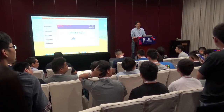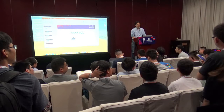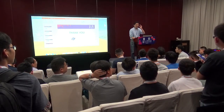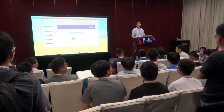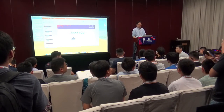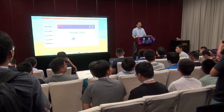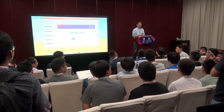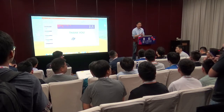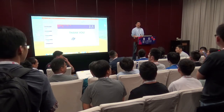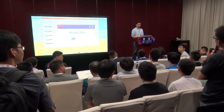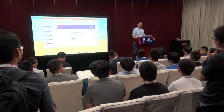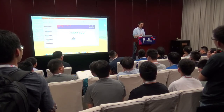Does CoreDNS support dual stack — a combination of IPv4 and IPv6? That's an interesting question. I believe it should, but no one has tested that before. You can open an issue, and if it doesn't support it, I'll try to make sure it works.